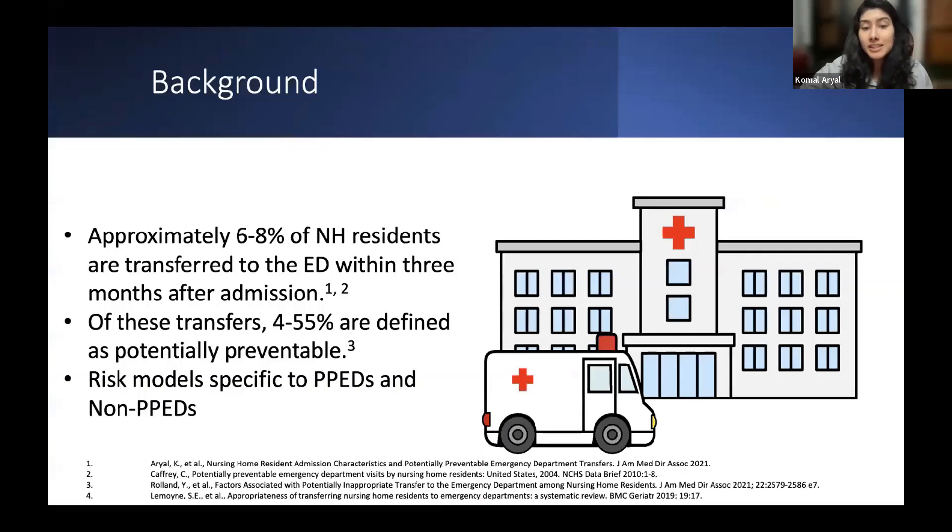So now I'm going to briefly introduce this topic. Approximately 6-8% of nursing home residents are transferred into the emergency department within the first three months after admission, and of these transfers, four to five percent are defined as potentially preventable.